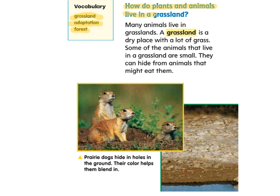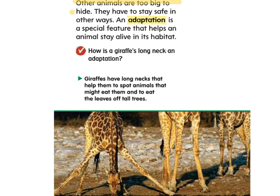How do plants and animals live in a grassland? Many animals live in grasslands. A grassland is a dry place with a lot of grass. Some of the animals that live in a grassland are small — they can hide from animals that might eat them. Prairie dogs hide in holes in the ground; their color helps them blend in. Other animals are too big to hide and have to stay safe in other ways.